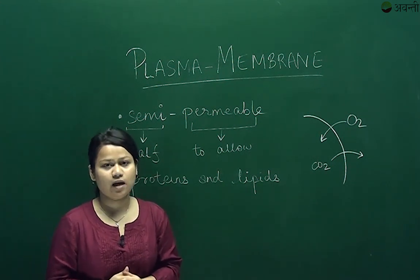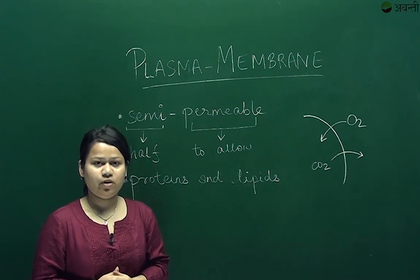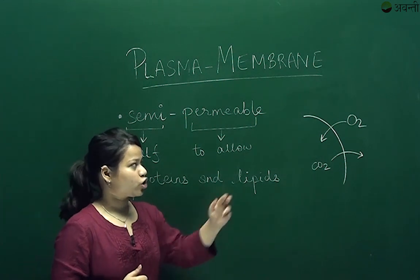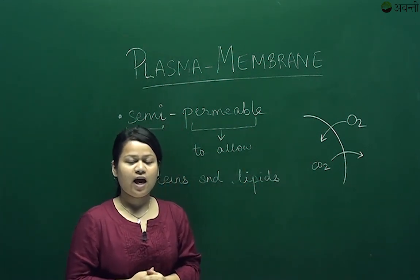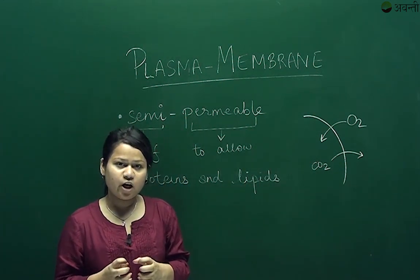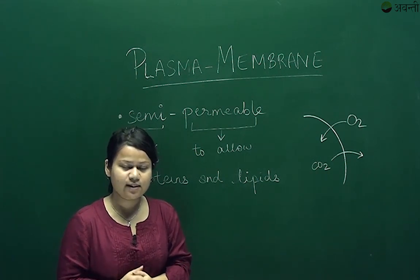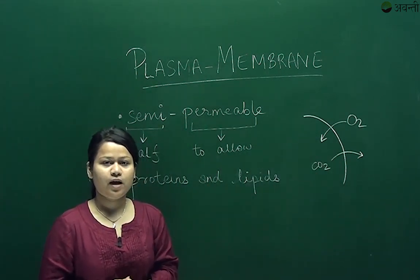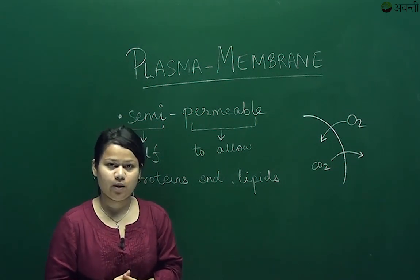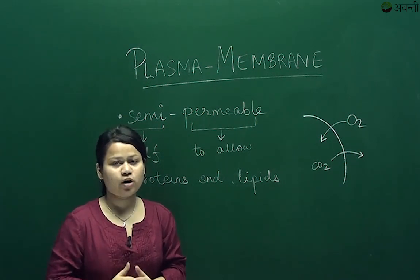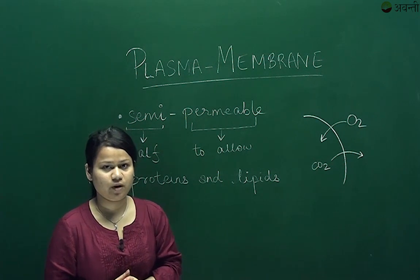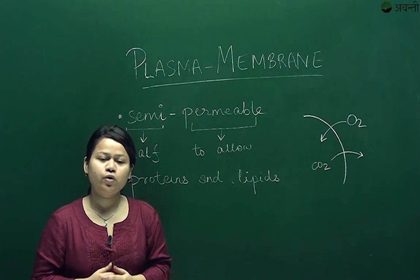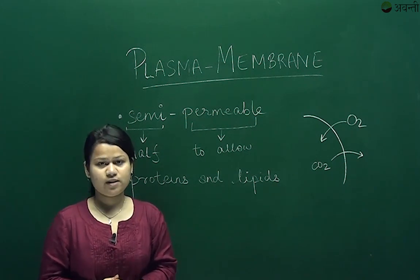Now let's look at an example of the plasma membrane's function. During respiration, the plasma membrane allows oxygen to enter the cell, and once a lot of carbon dioxide has accumulated inside the cell, it ensures that the carbon dioxide exits the cell. The plasma membrane is made up of two important molecules: protein and lipid.